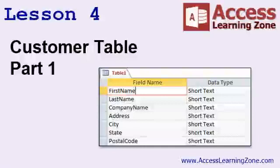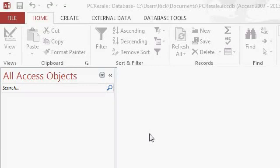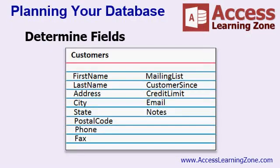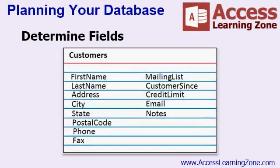In lesson four, we'll begin building our customer table. Now that we know our way around the Access interface, let's build our first table. Go back to your index cards and find the card for your customer table. These are all the fields we're going to add to the table in our database.